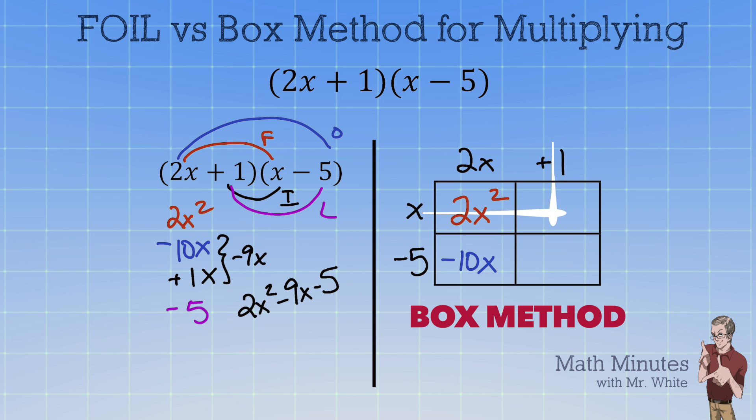And then let's move up to the top right. So that's 1x times 1 and that is +1x. That was the I on the left side of your screen. And then for the L we're going to take -5 times +1 and we fill that in the bottom right corner of the box.